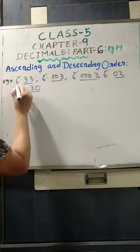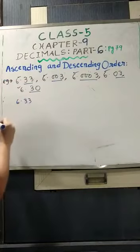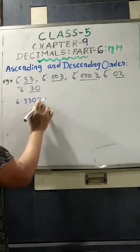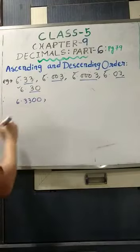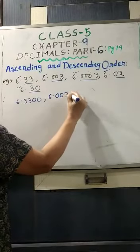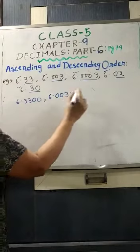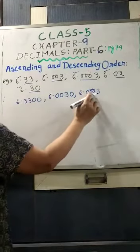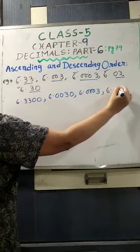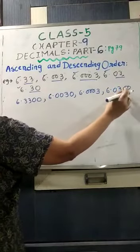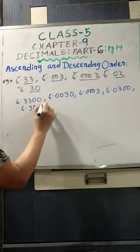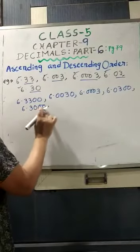Now: 6.33 has 2 digits after the decimal point, so we put 2 zeros — it becomes 6.3300. Then 6.003 has 3 digits, so we put 1 zero — it becomes 6.0030. 6.0003 already has 4 digits, so no change. 6.03 has 2 digits, so we put 2 zeros — it becomes 6.0300. And the last one, 6.30, we put 2 more zeros — it becomes 6.3000. Now all are 4-digit decimal numbers. Now we have to arrange these numbers in descending order — that means from bigger to smaller order.